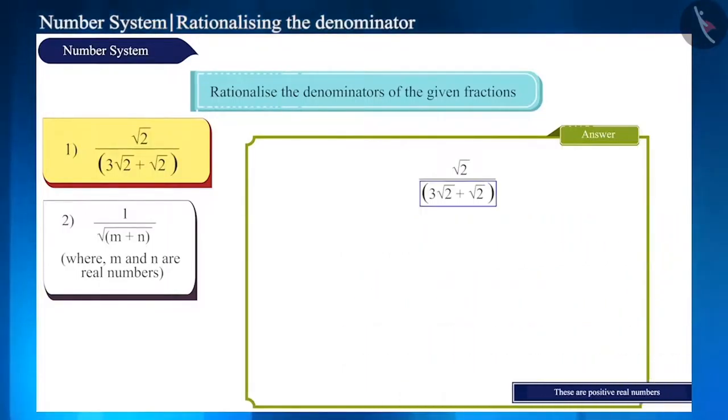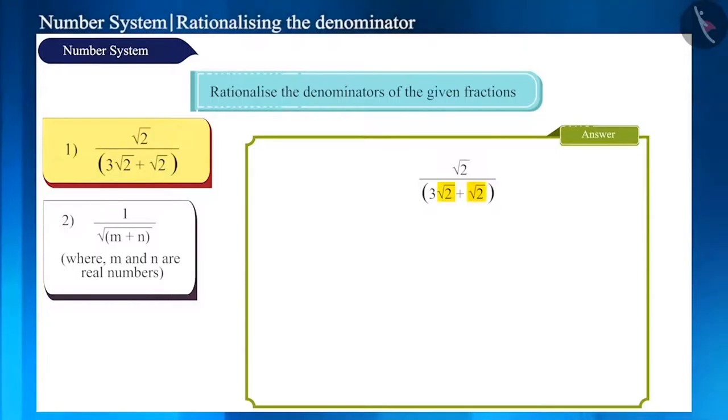Here, the denominator has root 2 in both the numbers. So we can combine them as 4 root 2. And since the numerator also has root 2, we can cancel it from the numerator and the denominator and get the result as 1 upon 4.